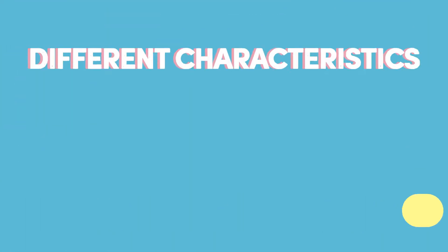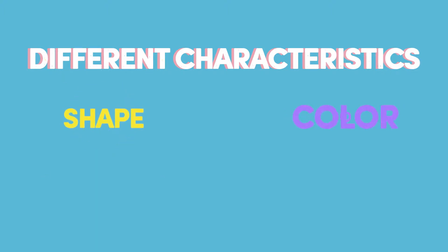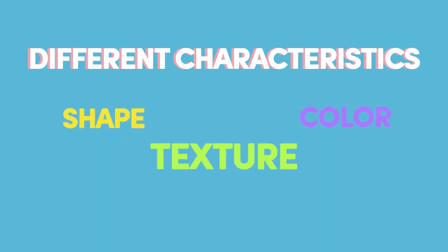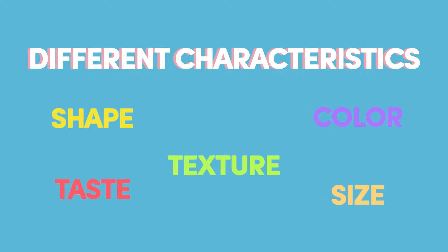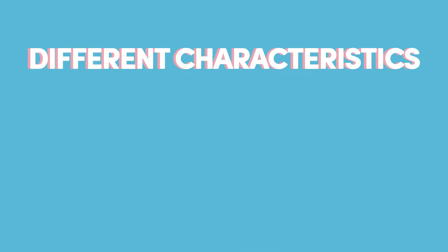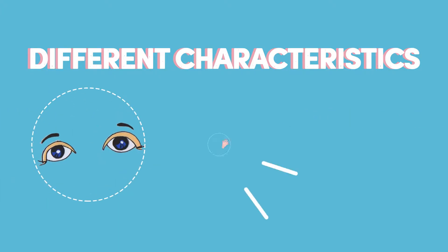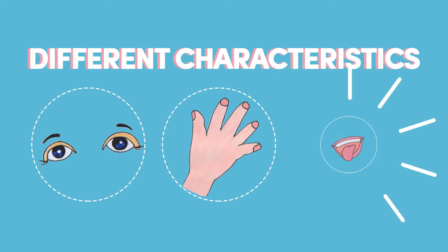What different characteristics are there? There's shape, color, texture, taste, and size. How can we tell? By using our different senses: seeing, touching, and tasting.